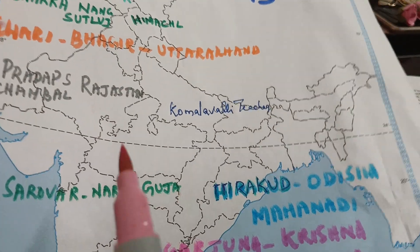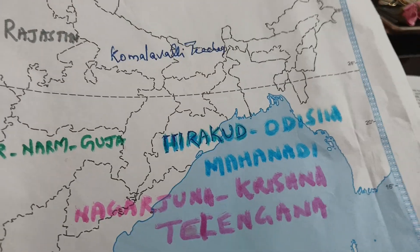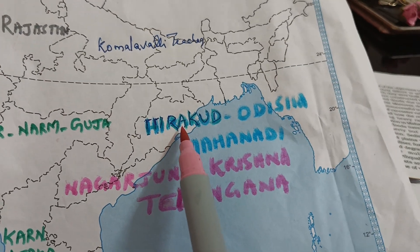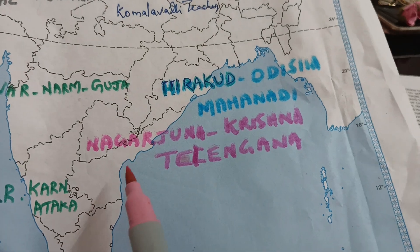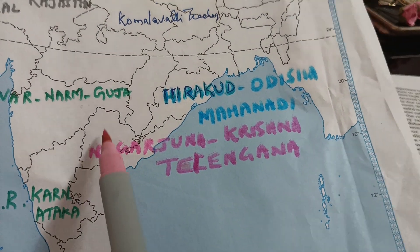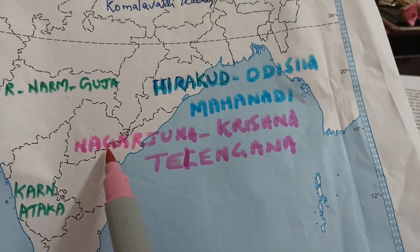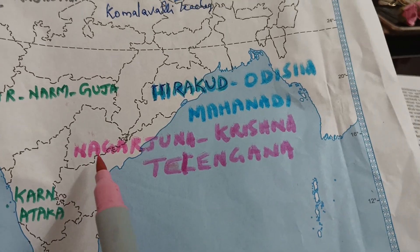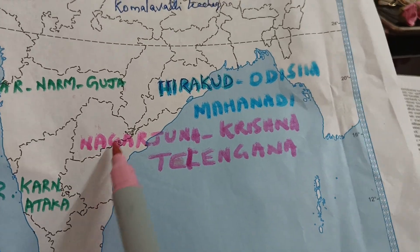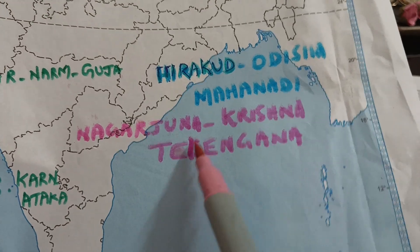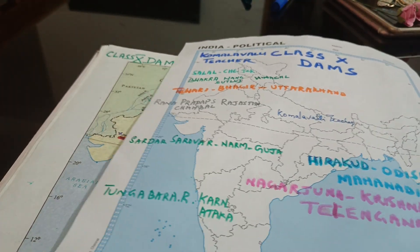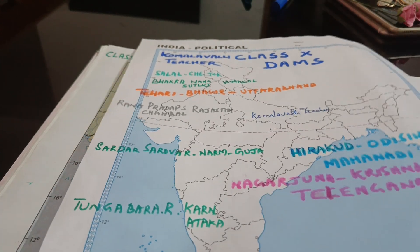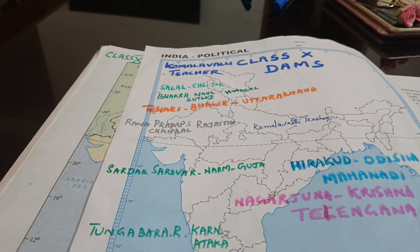This map is for understanding which state each dam is located in. Moving to the eastern coast, that is Odisha — that is Hirakud Dam. Then Andhra Pradesh and Telangana: Nagarjuna Sagar Dam is on the Krishna river in Telangana. Moving further south, you reach the Tungabhadra river in Karnataka — that is Tungabhadra Dam.